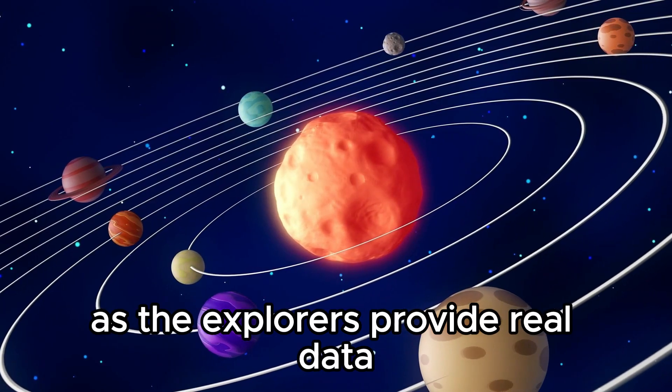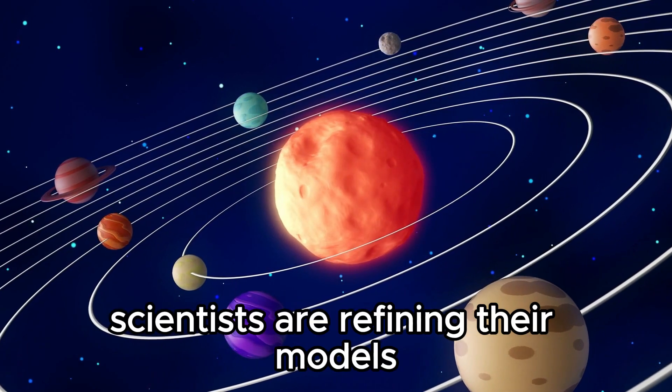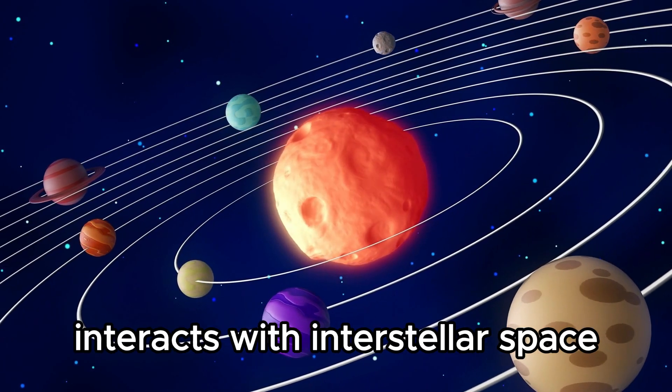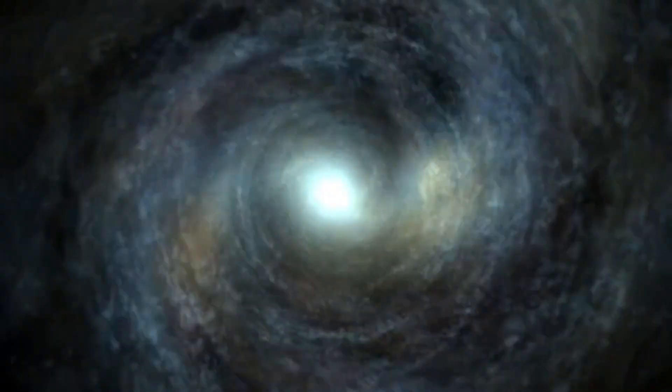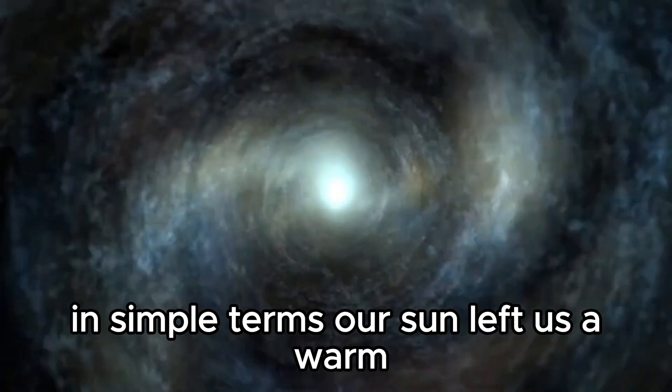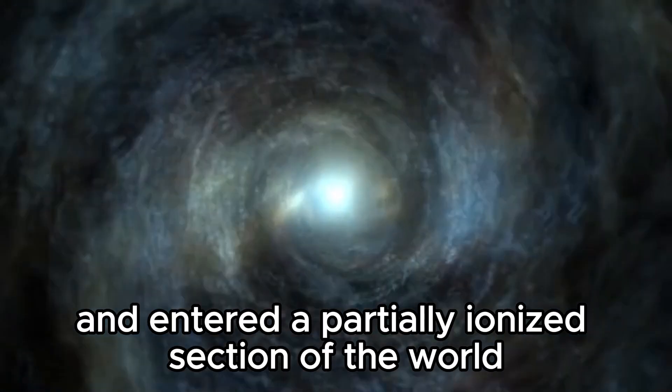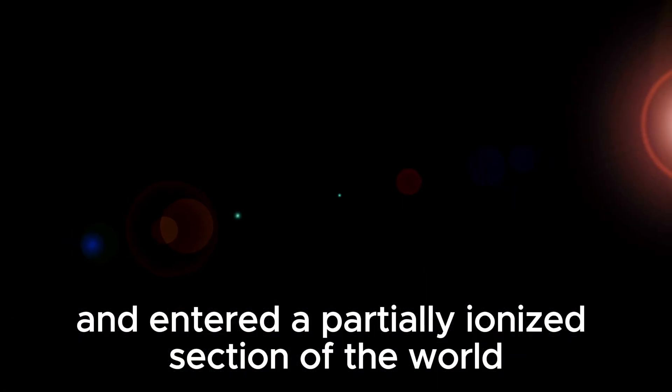As the explorers provide real data, scientists are refining their models of how the heliosphere interacts with interstellar space. In simple terms, our Sun left us a warm, ionized zone and entered a partially ionized section of the world. The hot zone.